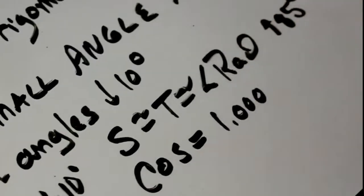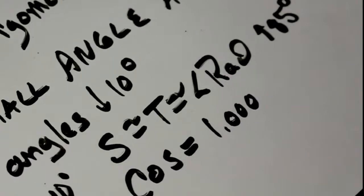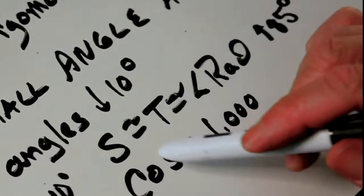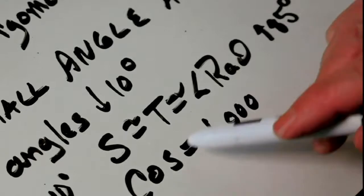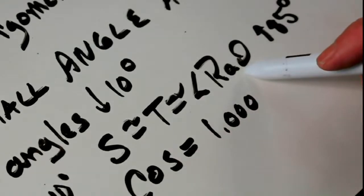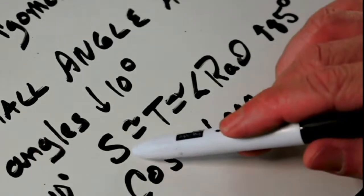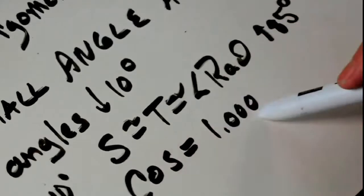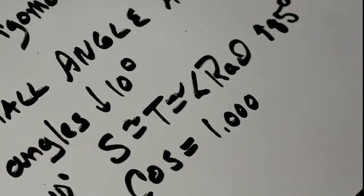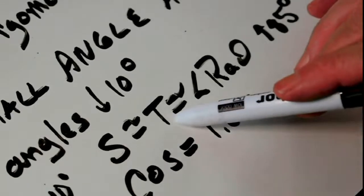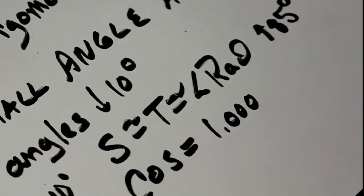In small angles, the sine and the tangent equal the radians. In the larger angles, the cosine equals the radian, and the sine is approaching 1. The tangent reaches 1 at approximately 45 degrees. And by the time you get up to about 85 degrees, the tangent is approaching 10.